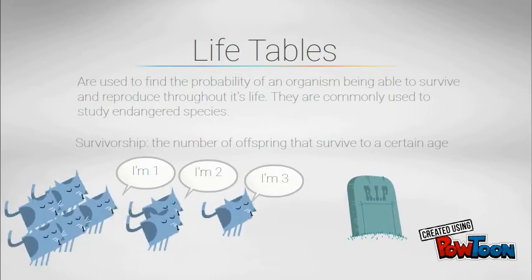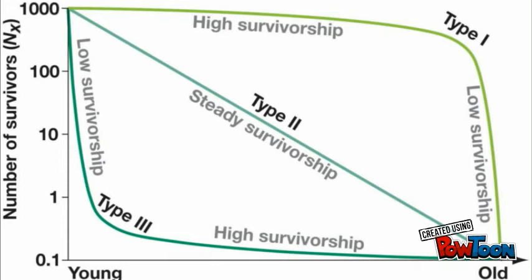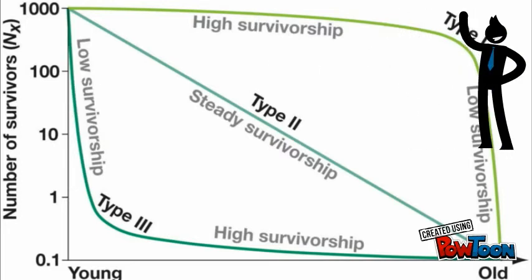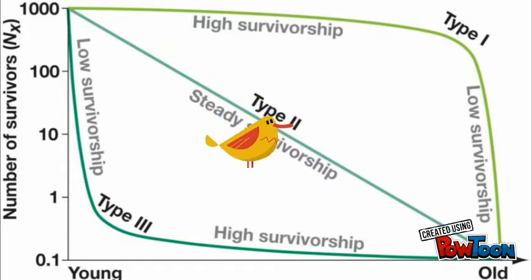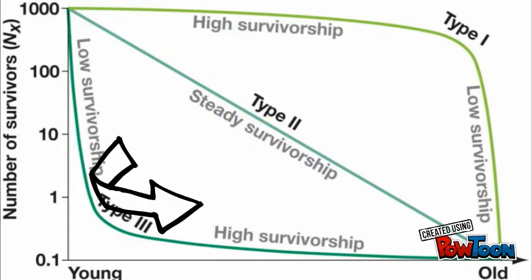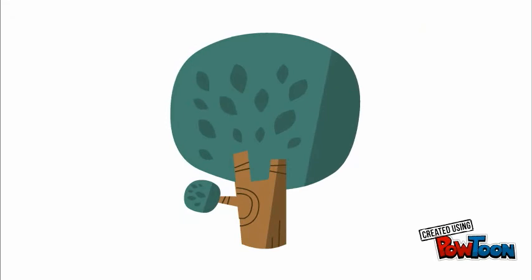Patterns of survivorship are seen in survivorship curves. Type one is where most organisms survive throughout their lifetime, but die off as they age. Type two is where at any age, the organism has the same probability of dying off — for example, songbirds. And in type three, young die off easily, but those who reach an older age survive. This is common in plants, where many seedlings don't sprout, but once they do, they survive.